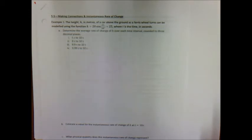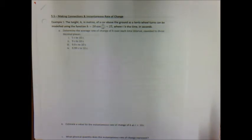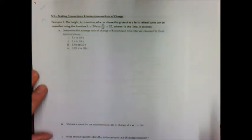Example one: the height h in meters of a car above the ground as a ferris wheel turns can be modeled using the function h equals 20 times the sine of pi t over 60 plus 25, where t is the time in seconds. Our job is to determine the average rate of change of h over each time interval, rounded to three decimal places. As we take the average rate of change of these intervals we'll be getting closer and closer to the instantaneous rate of change at 10 seconds, which is part b.